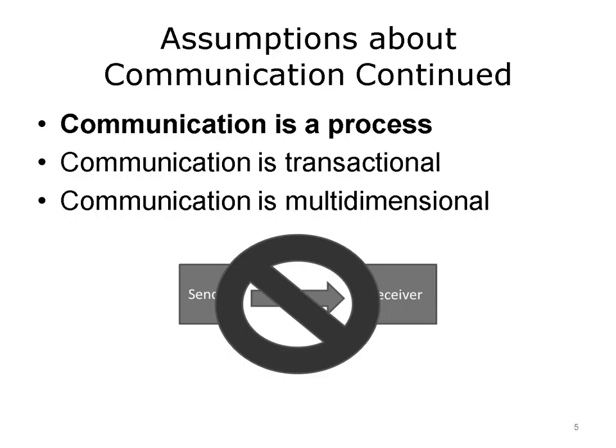Communication is ongoing, changing, and dynamic in nature. Many factors can impede effective communication. Examples include physical and emotional states, background knowledge, and abilities of both the sender and the receiver.